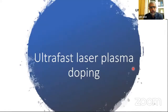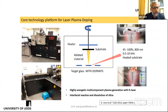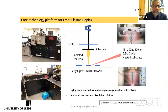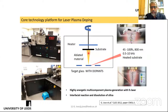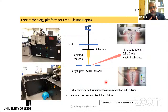In our research group, we use a particular method called laser plasma doping. Using equipment with a large laser, we ablate materials containing erbium ions and deposit them onto a glass substrate, where the material diffuses into the glass to produce an active layer. This is a unique method — in most cases you deposit on the surface, but here you produce a layer that is diffused into the surface.